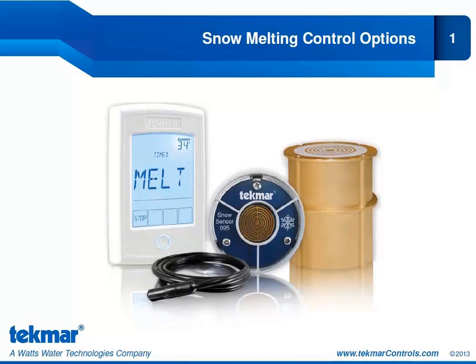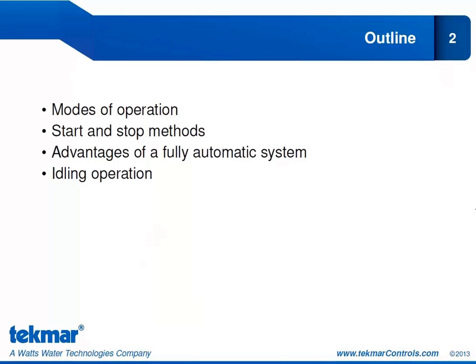Welcome to the second segment of Tecmar's Snowmelting Training Webinar Series. This segment takes a generalized look at the methods with which a snowmelt system can be operated. We'll present you with the options, and you can determine which might be most suitable for you and your application. The outline is to begin with the various modes of operation, then look at different ways we can start and stop a snowmelt system, followed by the advantages of having a fully automatic system, and finally idling operation.